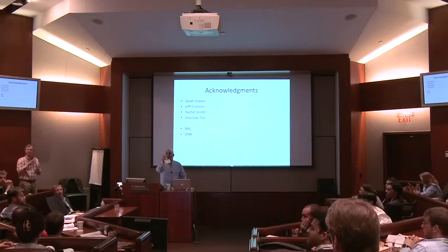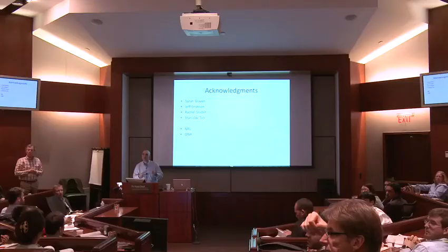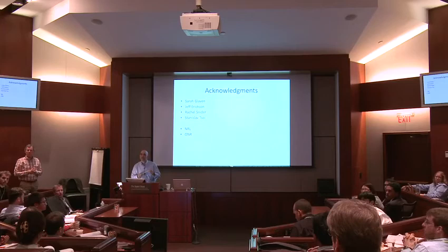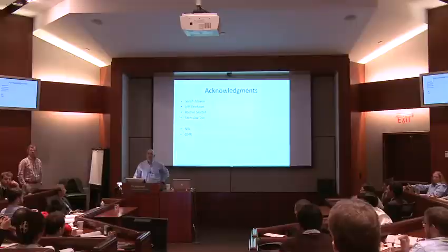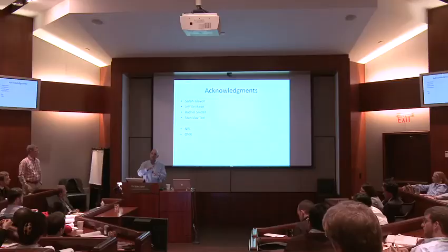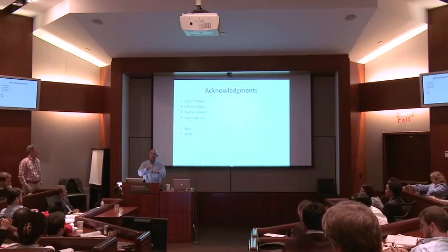Question: Would a higher anode potential promote thicker biofilm development? According to the mediator model, if you apply a more positive potential to the anode, the mediator determines the rate of the electron transfer reaction between the mediator and the electrode. Once the electrode becomes positive enough, the electrons flow through — it doesn't matter if you make it any more positive. Experimentally, as you start poising the anode more and more positive, you don't get any increased biofilm thickness or higher catalytic activity.